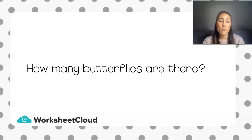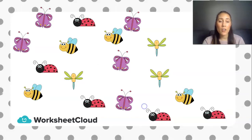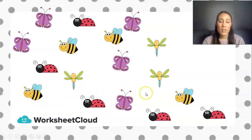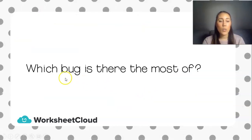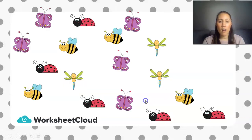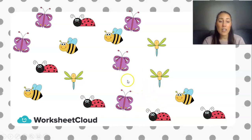I might have to go and count how many butterflies there are. One, two, three, four, five. Wouldn't it be a little bit easier if all these butterflies were grouped together in one place? We've answered that question — it was five butterflies. Now let's see another question: which bug is there the most of? If I look at this picture, that's very difficult to answer quickly because I'd have to count all the bugs and see which one has the most. That might take a very long time, so let's skip that question.